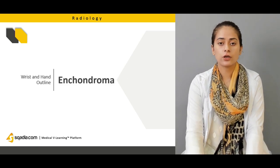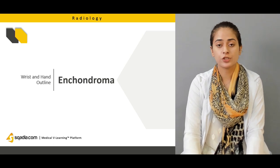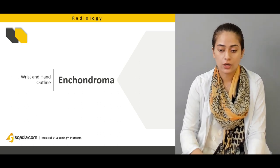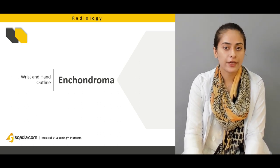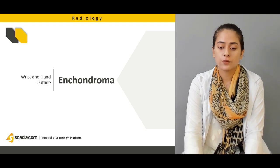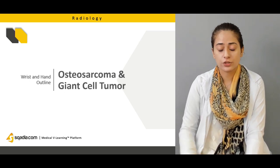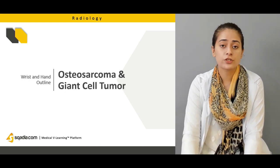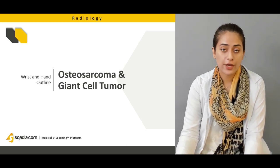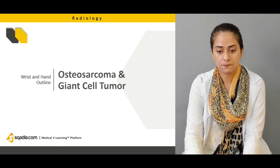Then we'll talk about enchondroma, which is cartilage cancer. We'll see how that appears on the radiograph. Then we'll also talk about osteosarcoma, which is bone cancer, and we'll see how that appears on the radiographs as well.